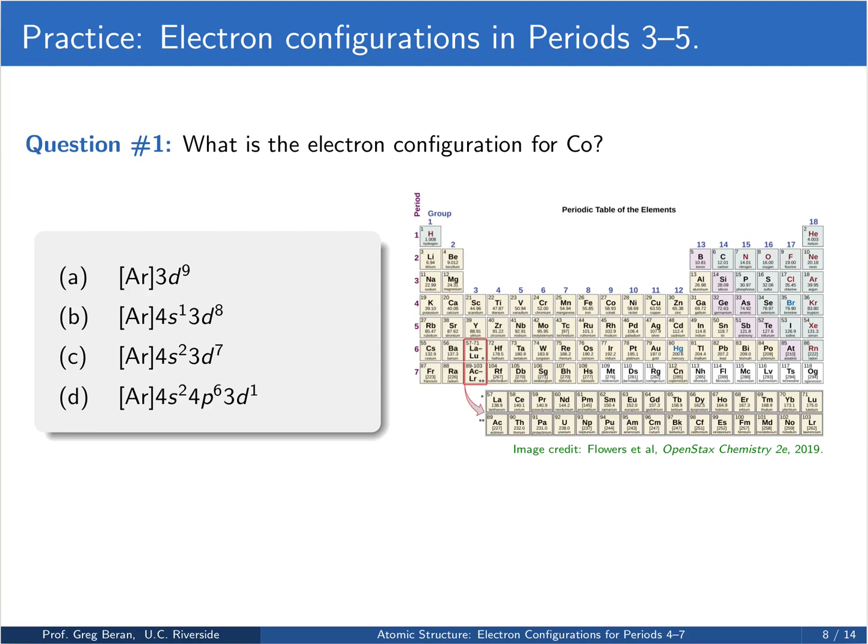Let's try a practice problem. What is the electron configuration for cobalt, which is right here, element 27? Attempt this problem and hit resume on the video when you're ready to hear the solution.